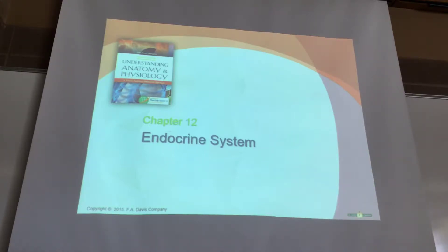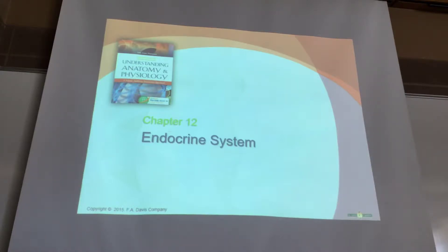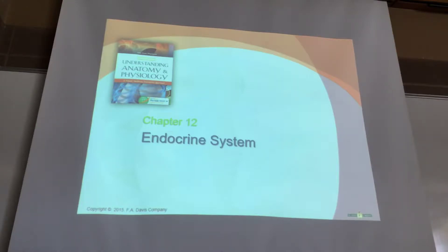Chapter 12: the endocrine system. I paired the endocrine and the nervous system together because they do similar things. They both have the ultimate goal of establishing or maintaining homeostasis in your body, always trying to adjust things so that we are in homeostasis. They use their medium to control those functions for that goal.